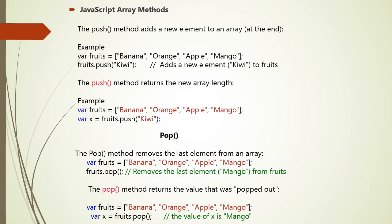Consider the pop method, which removes the last element from the array. With fruits = ['banana', 'orange', 'apple', 'mango'], calling fruits.pop() removes 'mango'. The pop method returns the value that was popped out. For example, if we say let x = fruits.pop(), the value of x is 'mango' because we popped it out.